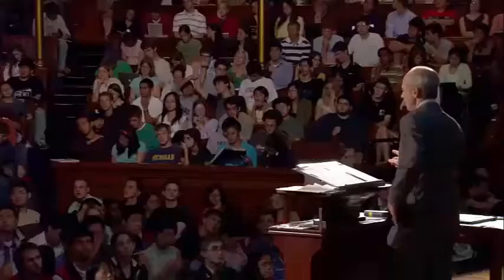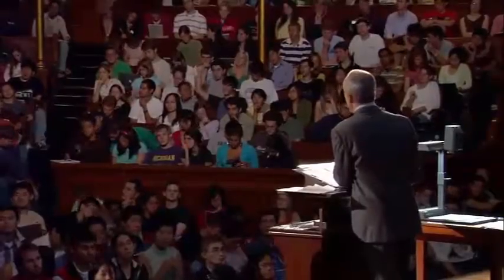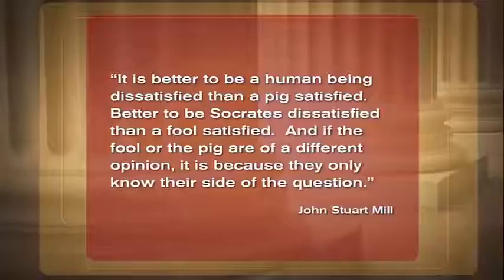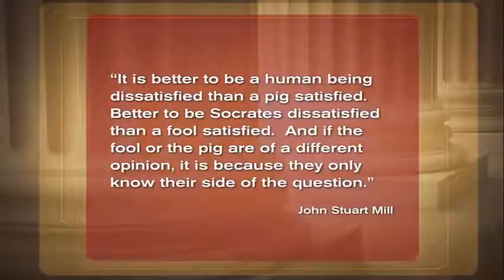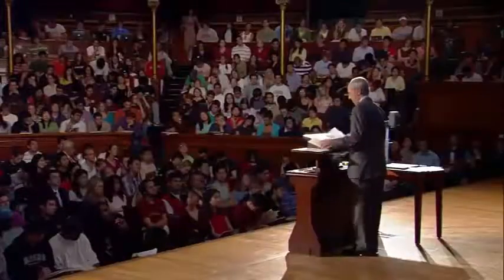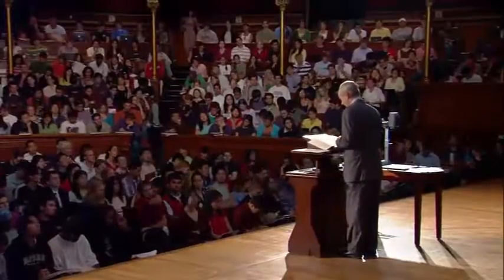Mill's point is that the higher pleasures do require cultivation, appreciation, and education — he doesn't dispute that. But once having been cultivated and educated, people will not only see the difference between higher and lower pleasures, but will actually prefer the higher to the lower. Hence the famous passage: 'It is better to be a human being dissatisfied than a pig satisfied. Better to be Socrates dissatisfied than a fool satisfied. And if the fool or the pig are of a different opinion, it is because they only know their side of the question.'